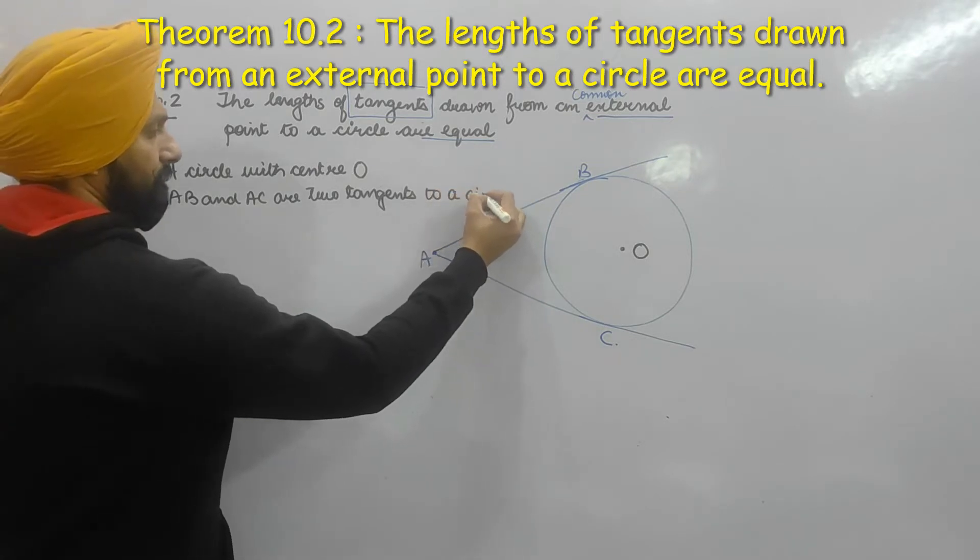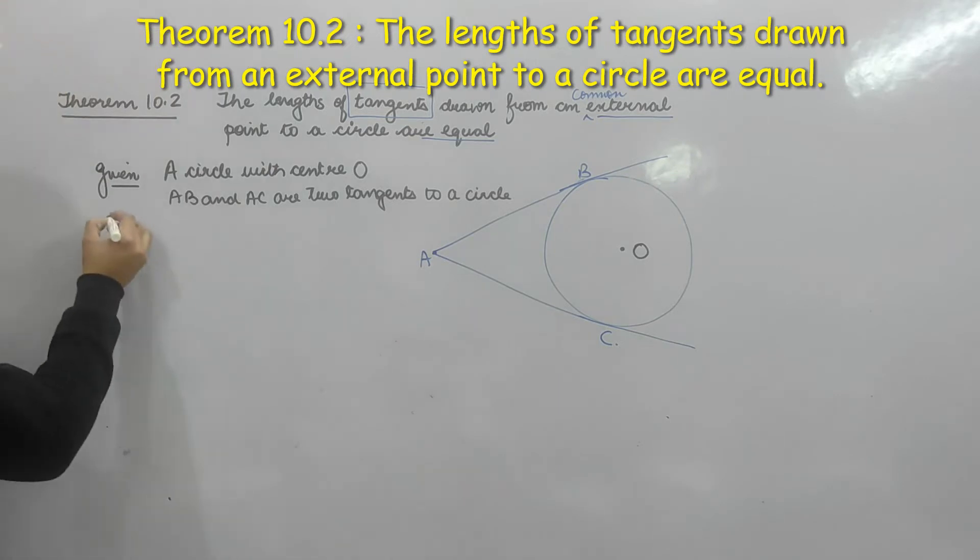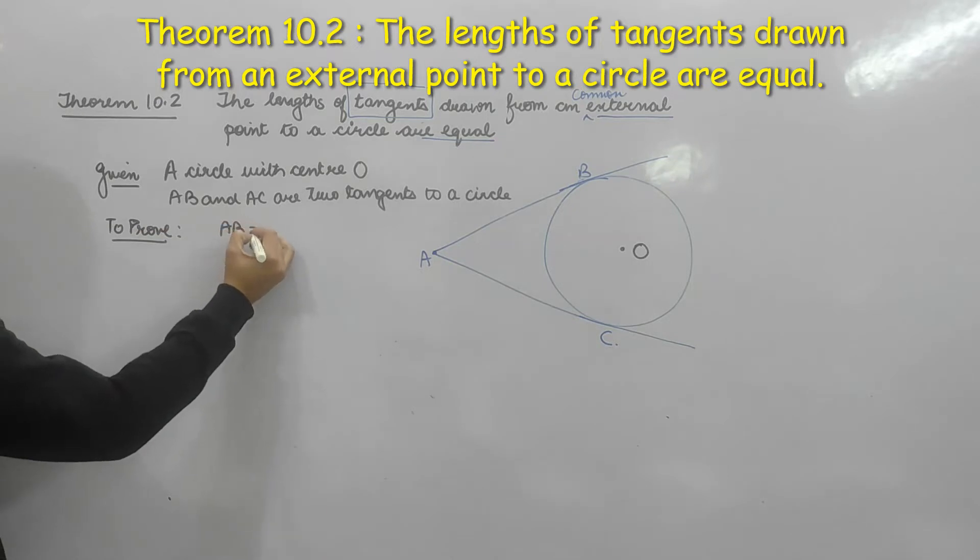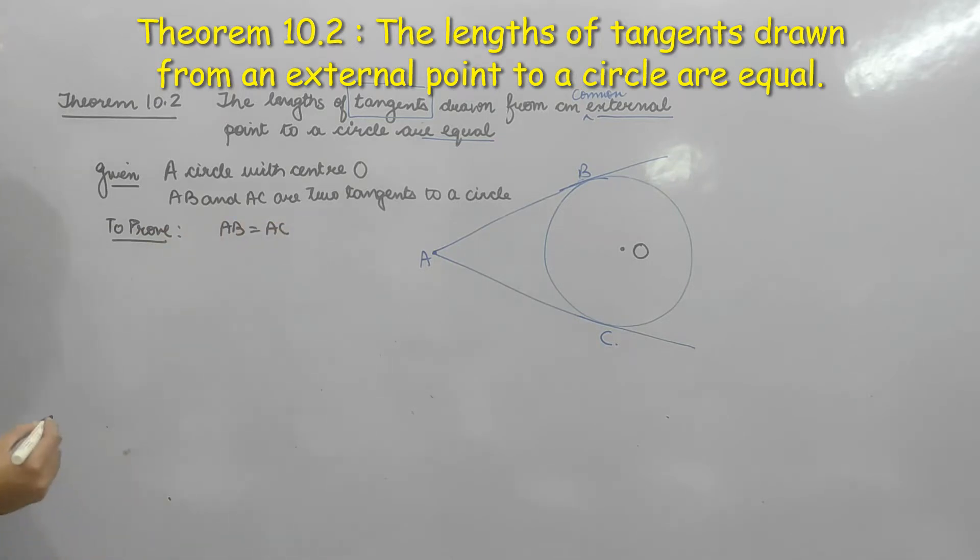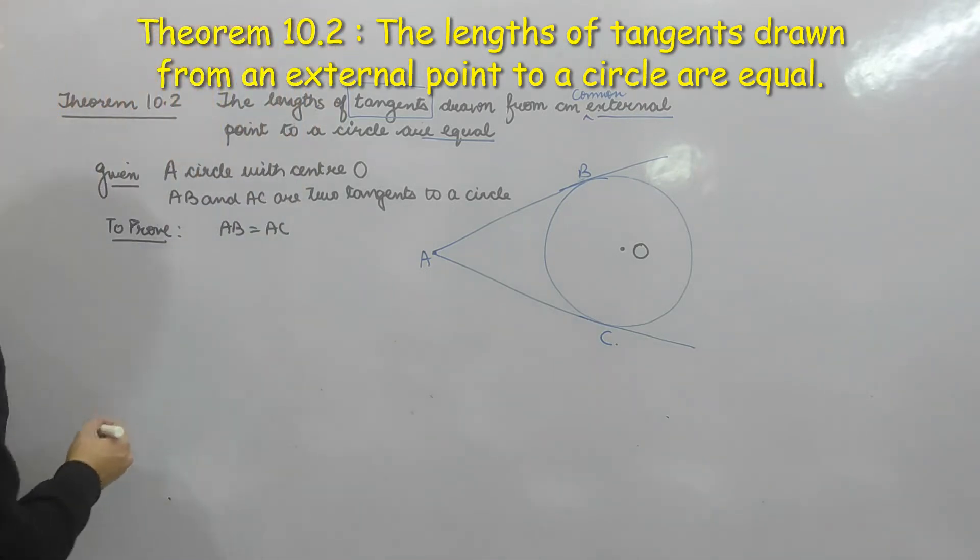To Prove: AB equals AC. There is a small construction. Construction: make...